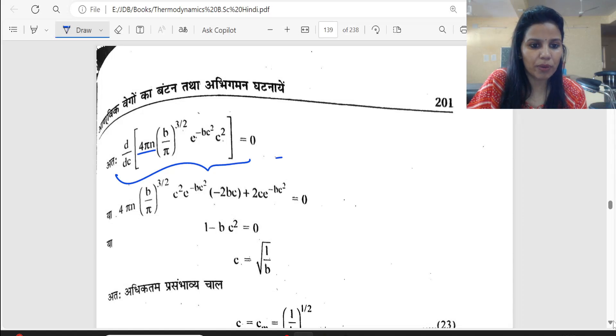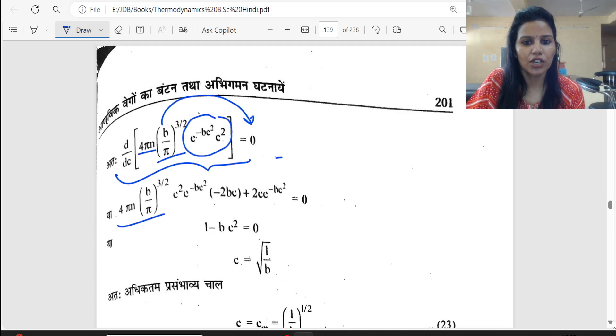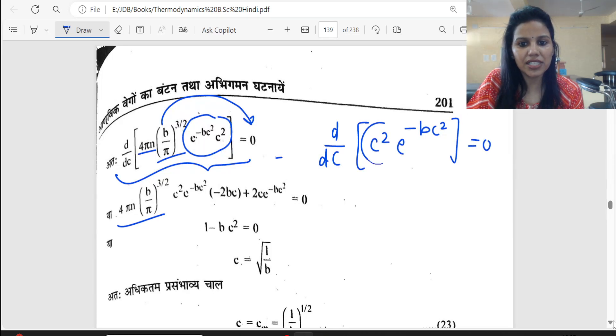First of all, 4πN times (b/π)^(3/2) - here we have only two functions, we will differentiate. So d/dc of C square e to power minus bc square equals zero. We will simplify it.